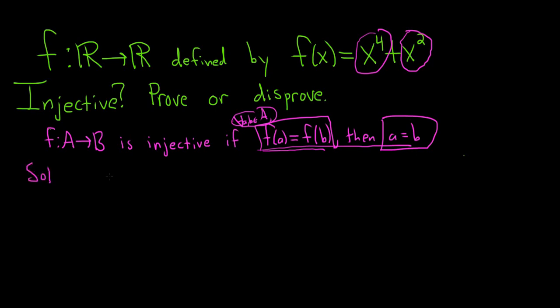So watch. So here's the solution. Let's disprove it. So take a equals 1 and b equals negative 1. So then f of 1 is equal to 1 to the fourth plus 1 squared, which is 1 plus 1.